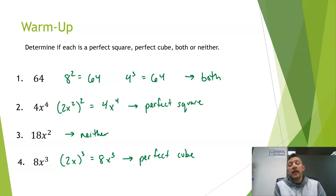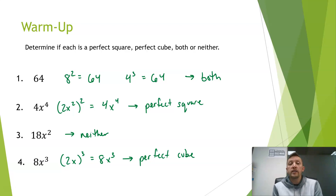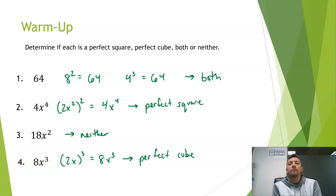Lastly, 8x cubed: 2 cubed is 8, and if you cube x, you get x cubed. So 2x quantity cubed would be 8x cubed — that is a perfect cube. That leads into what we're talking about today.